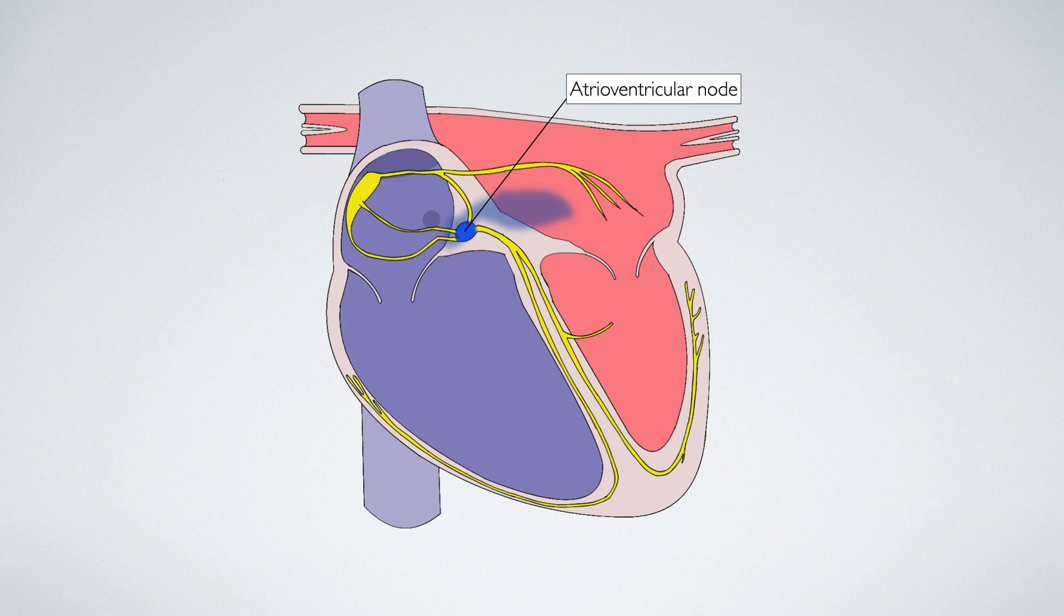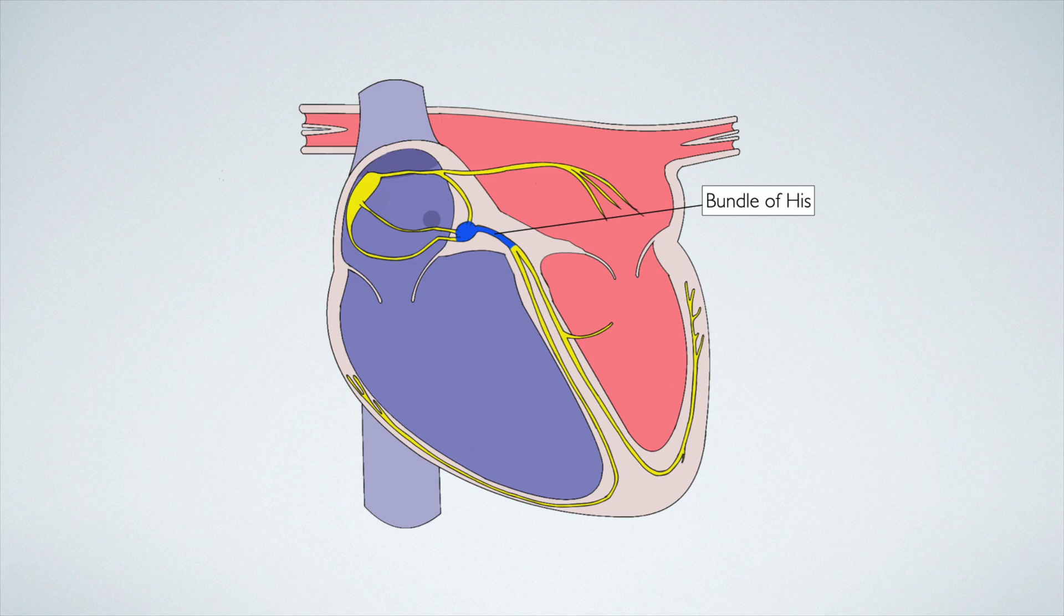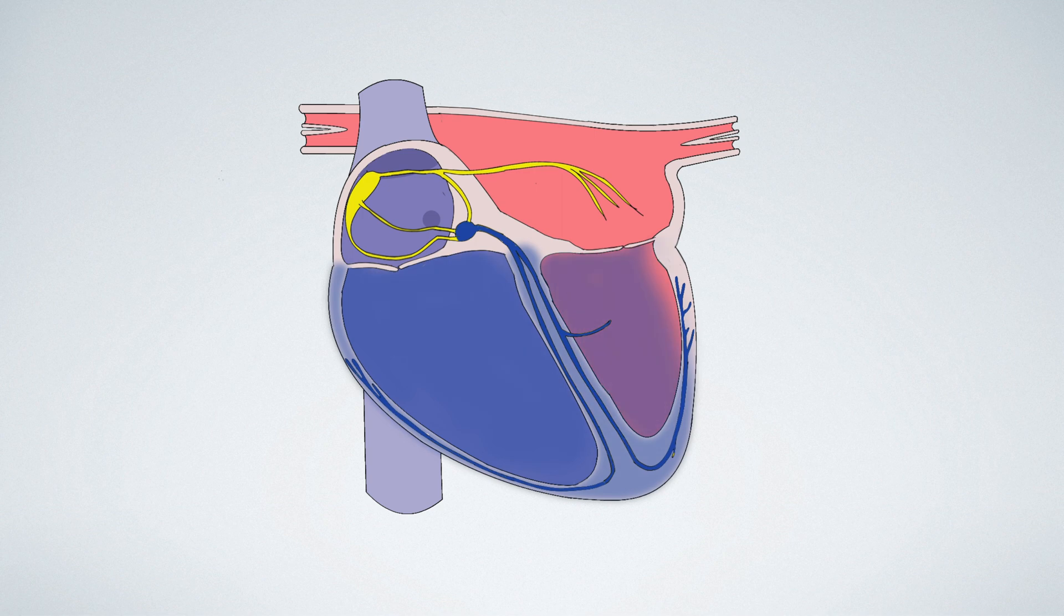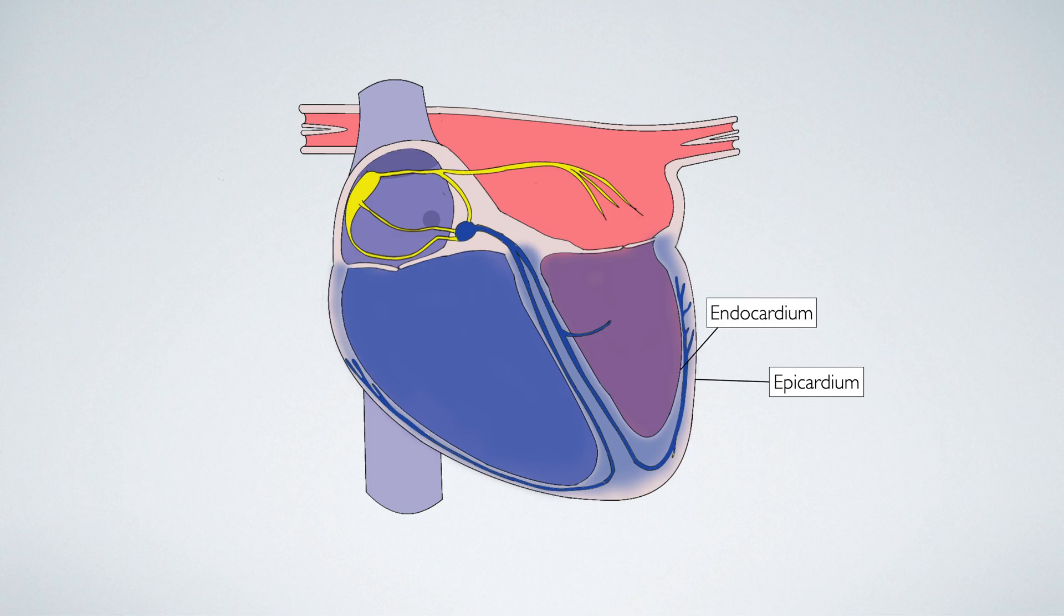After this brief pause, the electrical activity spreads to the bundle of hiss and then down the left and right bundle branches into the ventricles. The electrical excitation causes coordinated muscular contraction of the ventricles. Gradually, the electrical impulse fades away, starting at the outer surface of the ventricle muscle, the epicardium, and fading towards the internal surface, the endocardium.